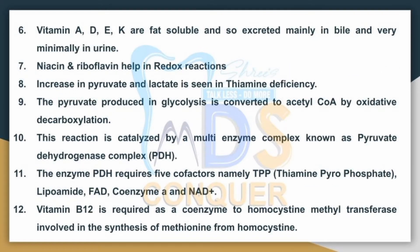Point No.6: Vitamin A, D, E, and K are fat soluble and they are excreted mainly in bile and very minimally in urine. No.7: Niacin and riboflavin help in redox reactions.